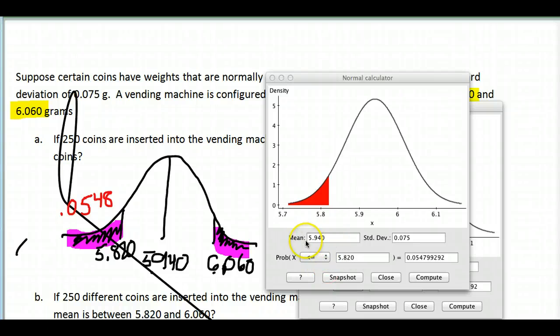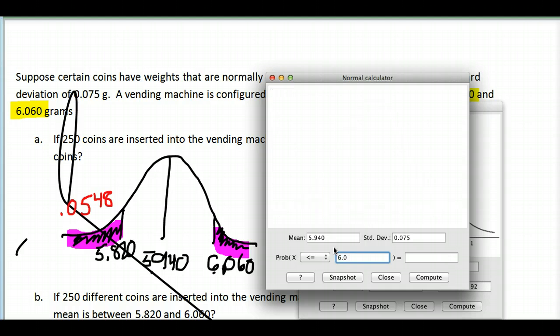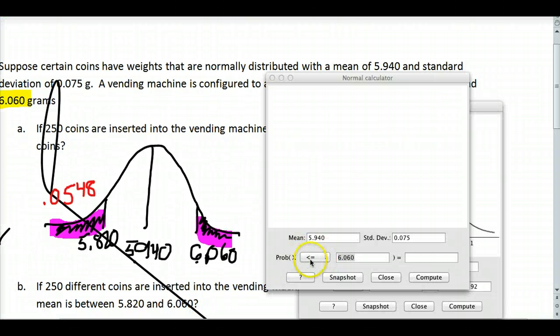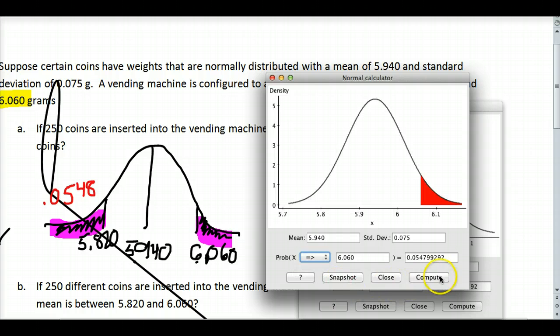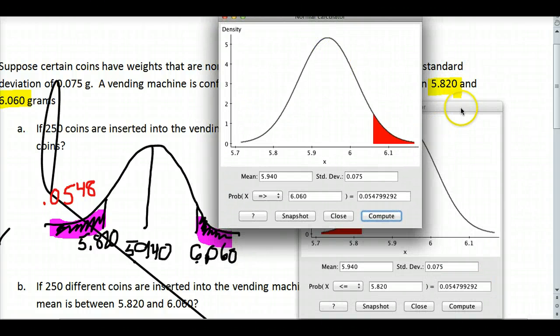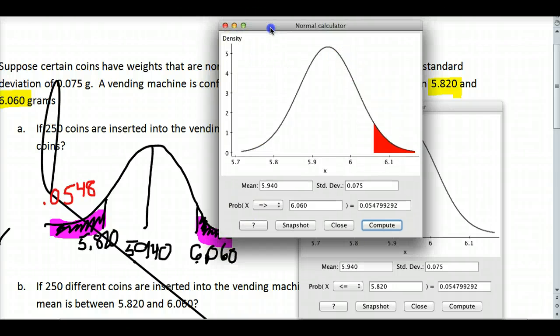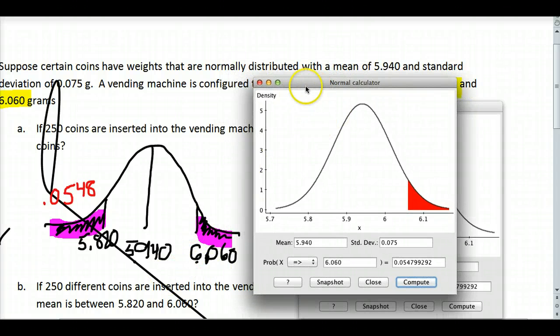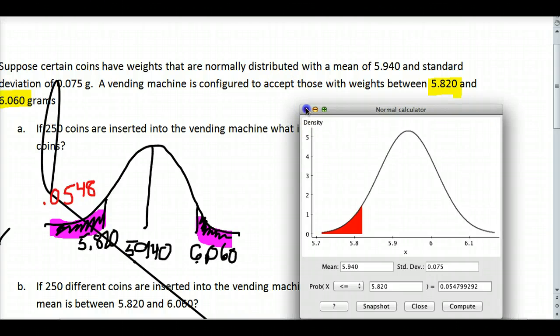Then I'm going to go ahead and do this again. My mean and standard deviation remain the same, but now I'm going to look at the other limit, 6.060. It's actually reaching not those less than 6.060, but those greater than 6.060. So instead of the less than and equal to, I'm going to turn this to greater than or equal to and hit compute. There I have my other area. You notice they are the same, and it's because it's a symmetrical distribution. Now depending on the values, that won't always happen, but this does happen because they happen to be the same number of standard deviations away from the mean.